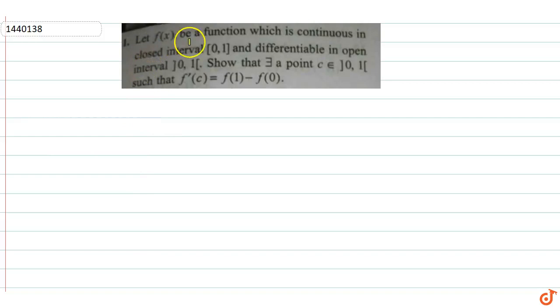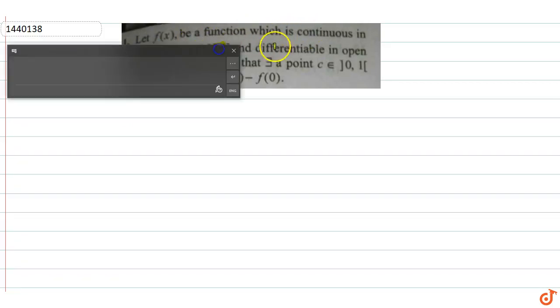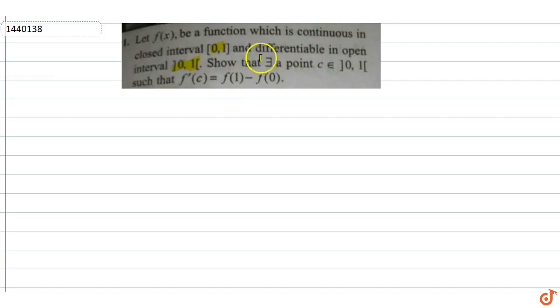In this question, let f(x) be a function which is defined on the closed interval [0,1] and differentiable in the open interval (0,1), such that there exists a point c which belongs to the open interval (0,1) such that f'(c) is equal to f(1) minus f(0).